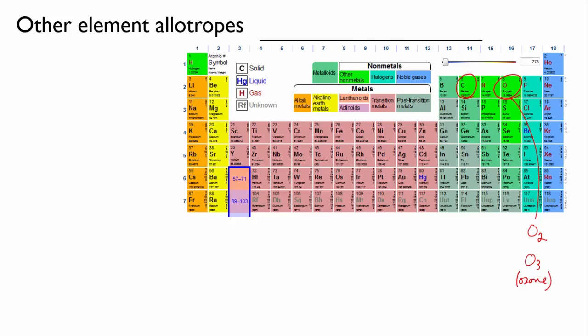Sulfur is in the same group as oxygen, and it's able to form diatomic molecules like oxygen, S2, but its preferred form is actually in rings of eight sulfur atoms.